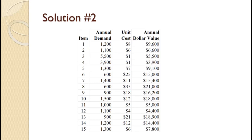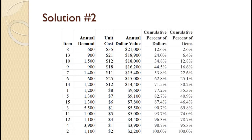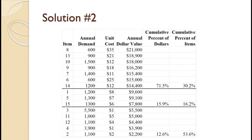The first step is to compute the annual dollar value for each item. Those results are shown on the slide. Next, we sort the annual dollar value for each item from highest to lowest. Those results are shown on the slide. Next, we compute the cumulative percentage of dollars and cumulative percentage of item values. Those results are shown on the slide. Finally, we divide into A, B, and C items. One possible division is shown on the slide, and remember, this is somewhat subjective. If you found that this video helped you with your operations management problem, please consider liking the video and even subscribing to the channel.